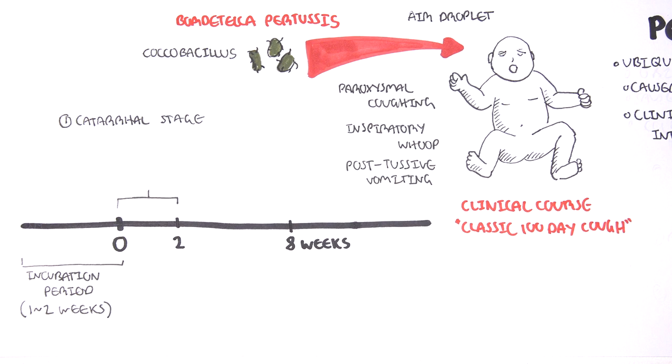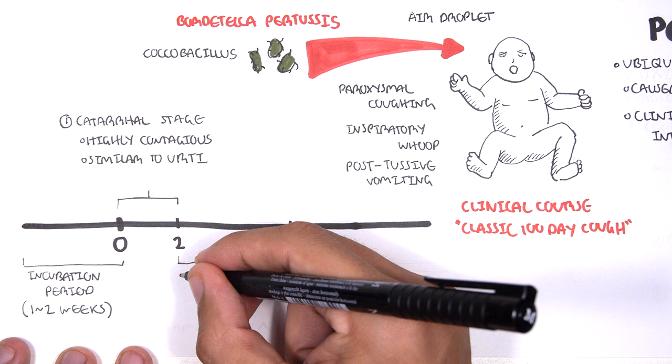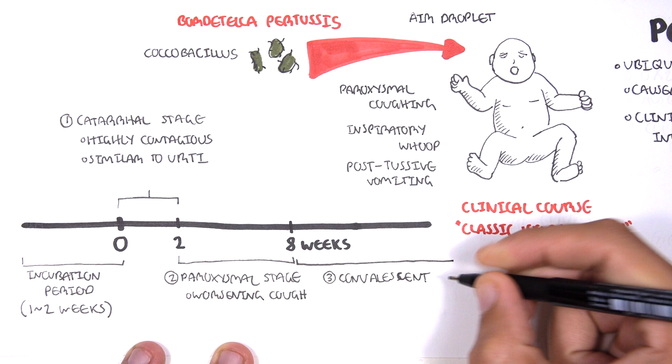Between two to eight weeks, the next stage is the paroxysmal stage where you get a worsening cough. Eight weeks onwards is the convalescent stage where the cough subsides with coughs here and there for weeks to months.